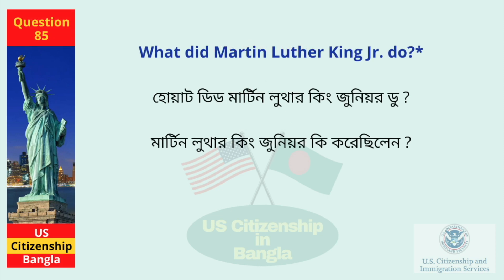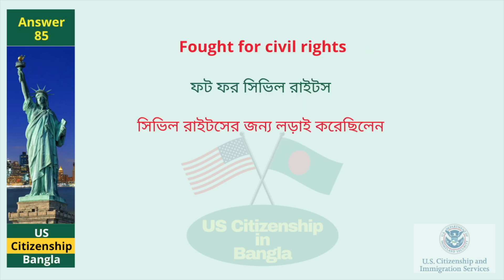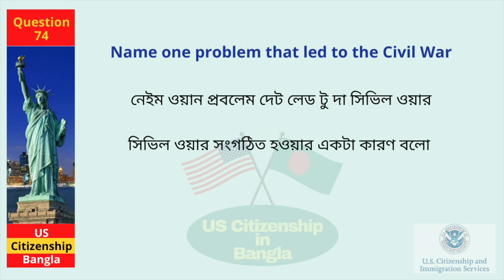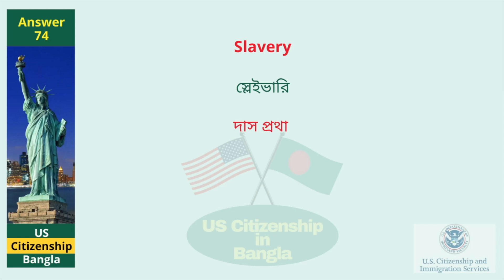What did Martin Luther King Jr. do? Fought for civil rights. Name one problem that led to the Civil War. Slavery.